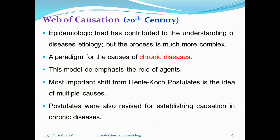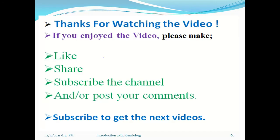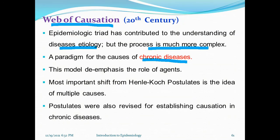The second type of model is the web of causation. Epidemiological study has contributed to understanding disease ecology, but the process is much more complex. This model serves as a paradigm for the cause of chronic disease. The triad model does not suit chronic disease, so this model de-emphasizes the role of agents.